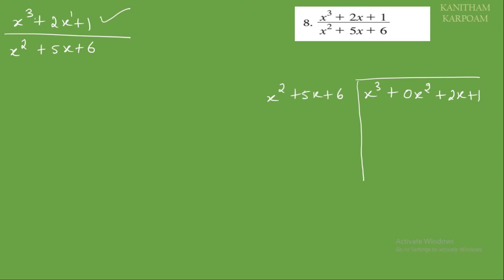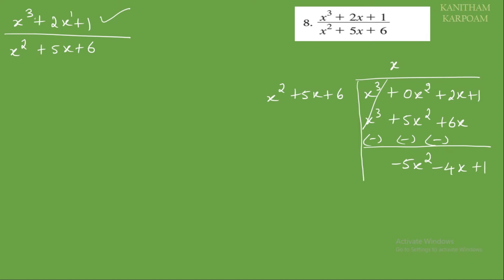Multiply x squared plus 5x plus 6 by x to get x cubed plus 5x squared plus 6x. Applying minus minus signs: we get minus 5x squared minus 4x plus 1.